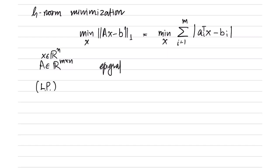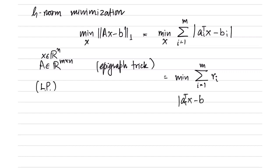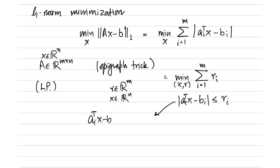Using the epigraph trick yields minimization over i equal to 1 to m of r_i, where the absolute value of A_i transpose x minus b_i is less than or equal to r_i. This is a minimization over x and r, where r is in R^m and x is in R^n, so the optimization variables are from dimension m plus n. This constraint can be written as A_i transpose x minus b_i less than or equal to r_i and greater than or equal to minus r_i.